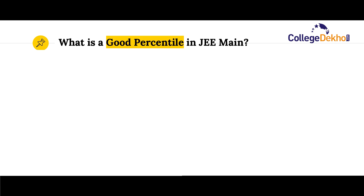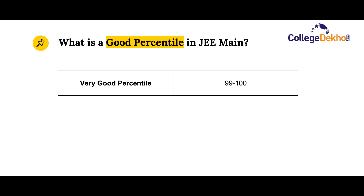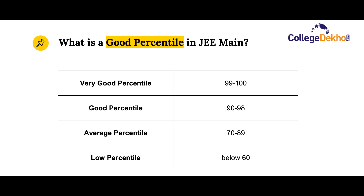So what is a good percentile in JEE Main? Based on our analysis of previous cutoffs, we have prepared a table. A very good percentile is somewhere around 99 to 100. A good percentile ranges between 90 to 98. An average percentile ranges between 70 to 89, and anything below 60 can be considered a low percentile score.